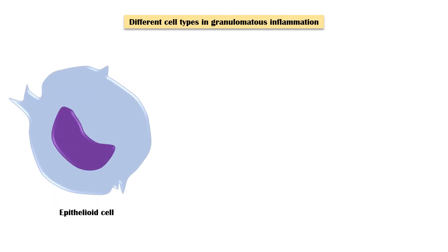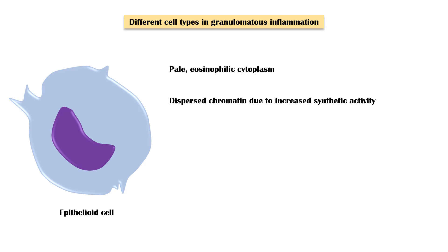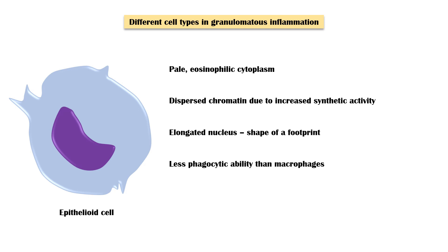Epithelioid cells are derived from activated tissue macrophages around the inflamed area. They have a pale eosinophilic cytoplasm, dispersed chromatin due to increased synthetic activity, and an elongated nucleus which has the shape of a footprint. They have less phagocytic ability than macrophages, but enhanced secretory and more microbial killing ability than macrophages.